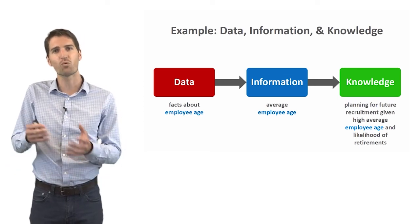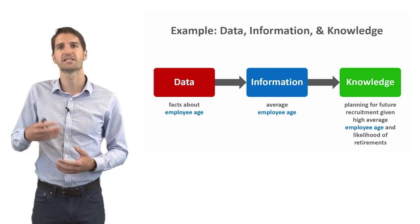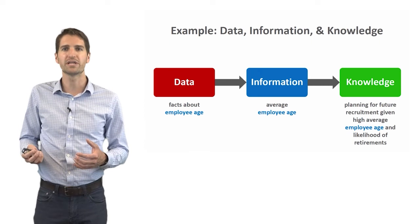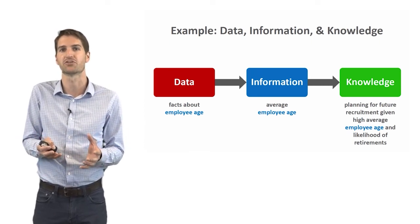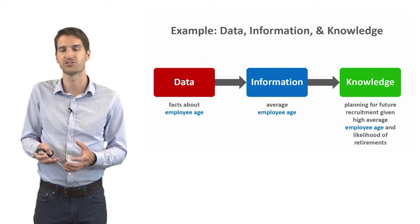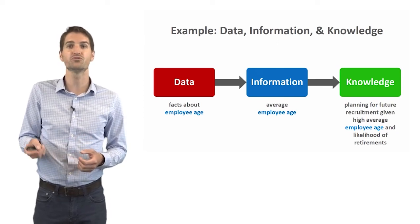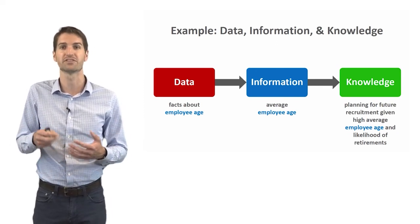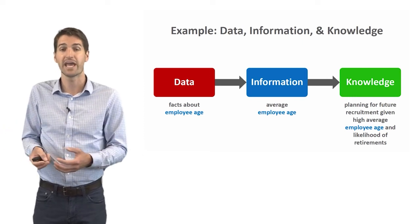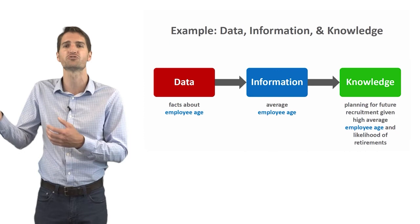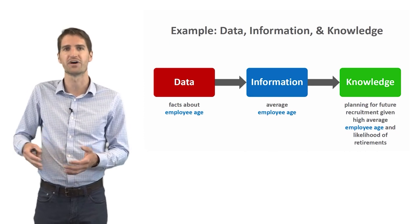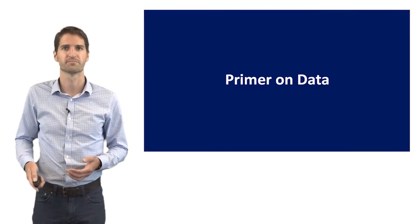Well, we can take that one step further by translating this into knowledge. And so we can take that average employee age. Let's assume this is considered a high average employee age in this context. And then we can use it to plan for future recruitment given the high average employee age and use this to anticipate the likelihood of retirement. Assuming that maybe most people are going to retire around 65 to 70 or so.